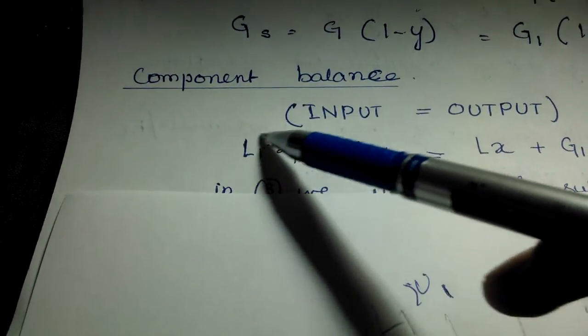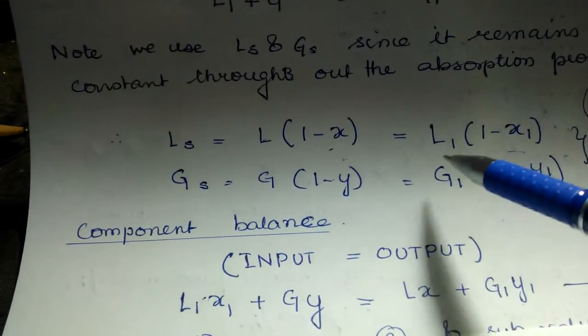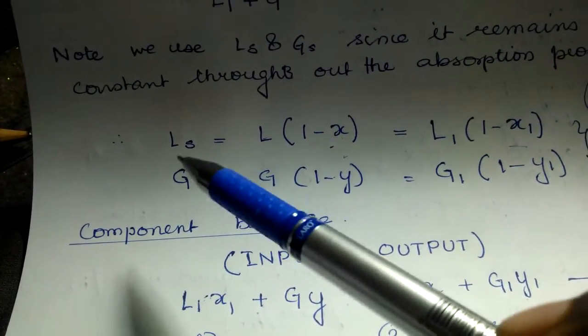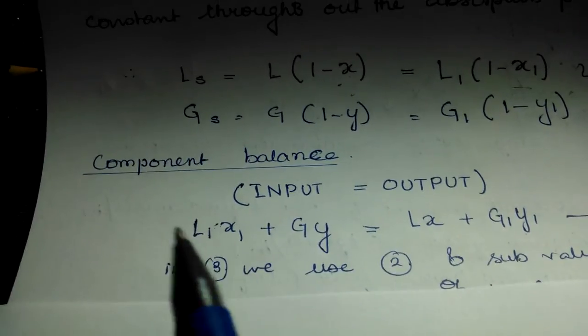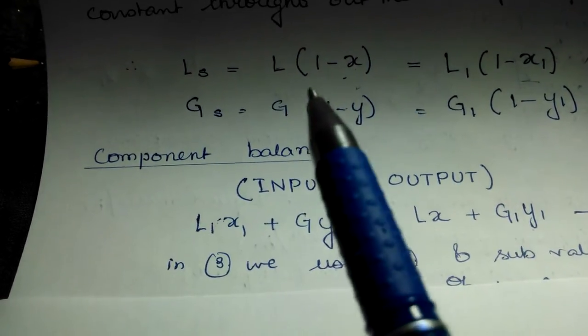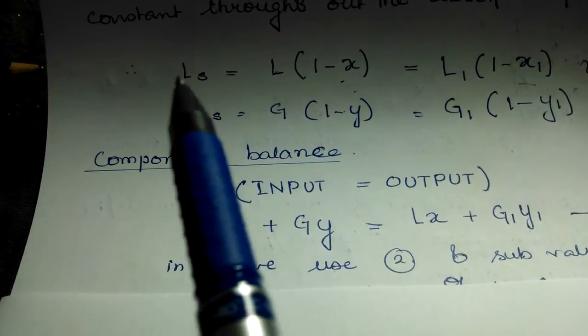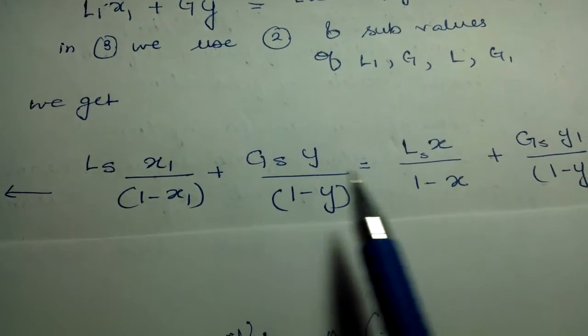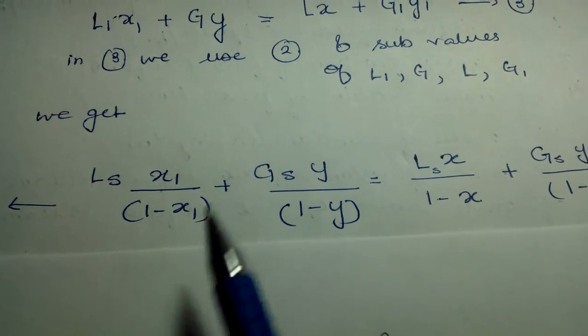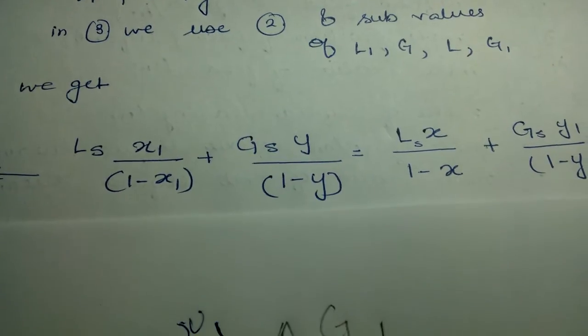Now I'm substituting the values of L1 from this, so L1 equals LS divided by (1 minus x1). On substituting all the L1s and Ls to get it in terms of LS, I get this equation. This is the theory we're supposed to know.